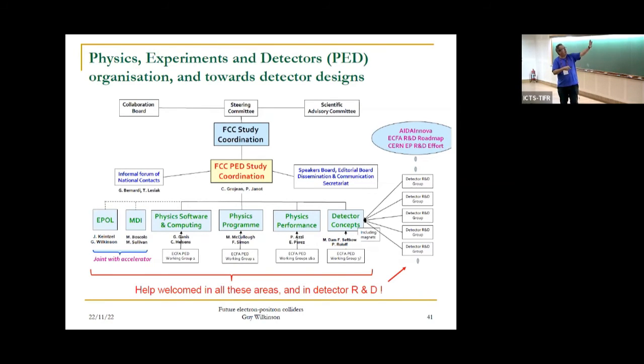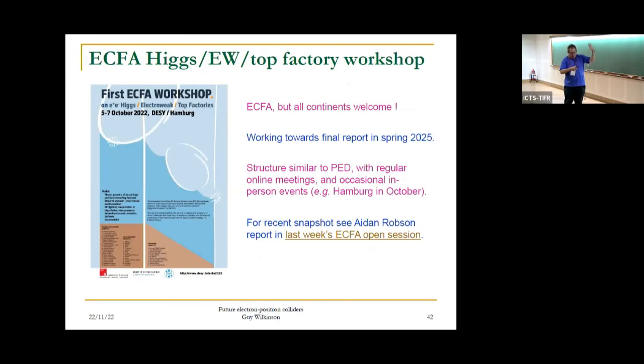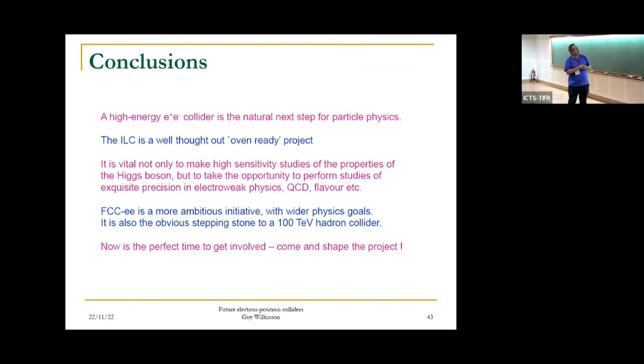I include here one of these organograms showing the physics experiments and detector pillar of the project. In these boxes down here, if you follow up with these names, these are people you can talk to to get involved. Parallel to all this, there's another workshop going on, the ECFA workshop, which is pursuing more or less exactly the same things but in a broader context, such that the efforts will be equally useful for the linear collider should that go ahead. There was a meeting at DESY in October. Here's a recent snapshot from Aidan Robson which you can click on.